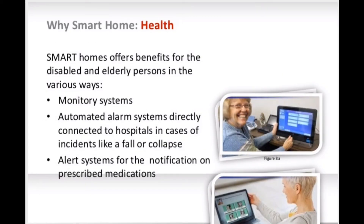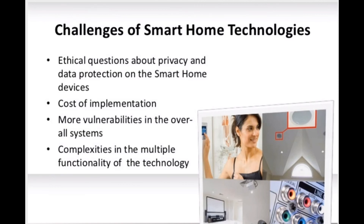The last important feature I'll discuss is health. Health is very important at any age, and smart homes offer benefits for disabled and elderly persons in various ways — for example, monitoring systems and alert systems for notification on prescribed medications, and automated alarm systems directly connected to hospitals in case of incidents like a fall or collapse.